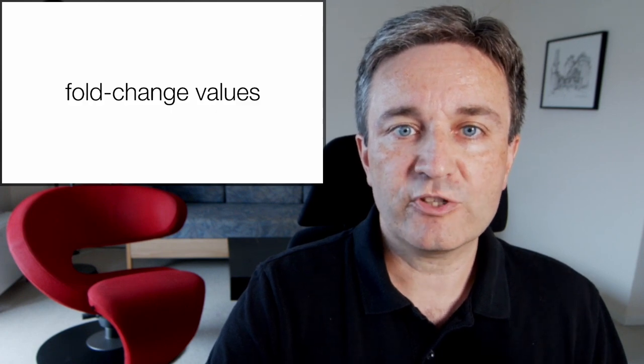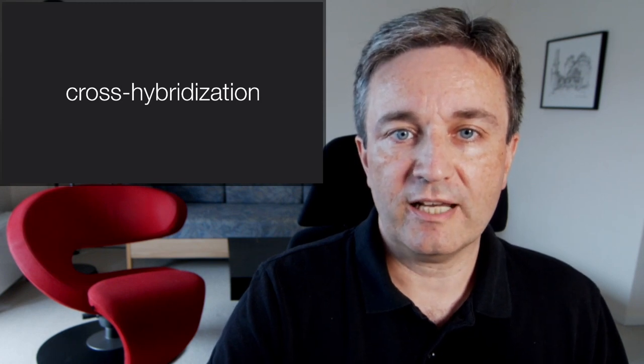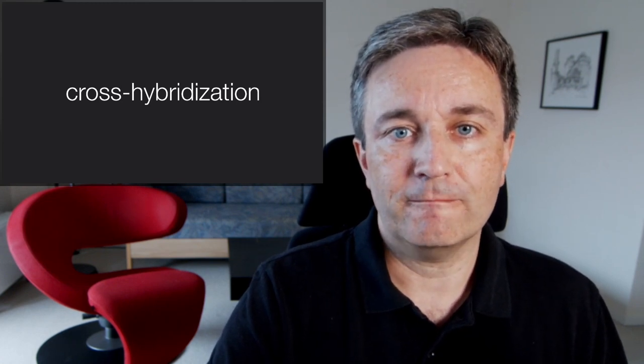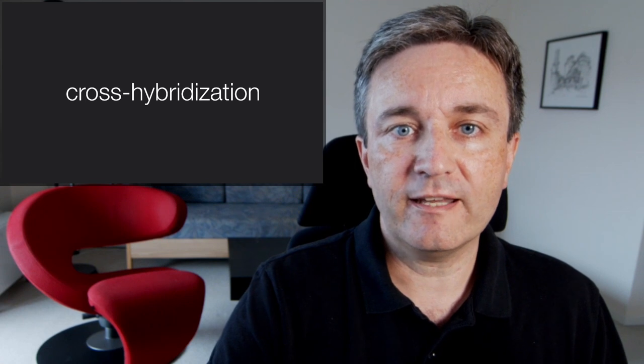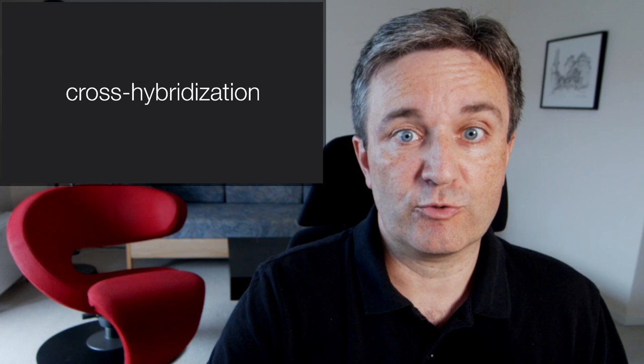The readout is therefore effectively directly fold change values. The major problem with this style of array is cross hybridization. Since you're using full length cDNAs, mRNAs of paralogous genes can easily cross hybridize to the wrong spots.